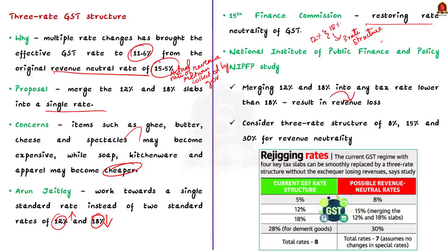In this discussion we saw how the existing GST works, the tax slabs, recommendations from former Finance Minister Arun Jaitley, the 15th Finance Commission, and the NIPFP study, as well as what would happen if the 12% and 18% slabs are merged. Now let us move on to the next news article.